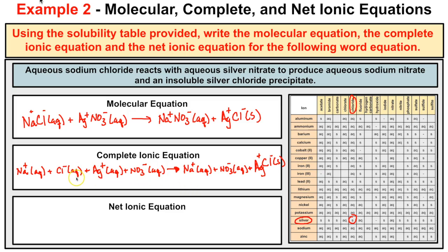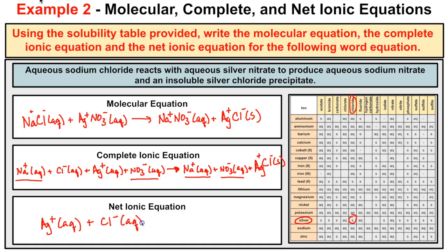Looking at both sides of the complete ionic equation, Na⁺(aq) appears on both sides and NO₃⁻ appears on both sides — these are your spectator ions and are left out of the net ionic equation. Typically you list the positive ion first. The net ionic equation is: Ag⁺(aq) + Cl⁻(aq) → AgCl(s). You can include the ionic charges on the precipitate if you like. So that is your molecular equation, complete ionic equation, and net ionic equation.